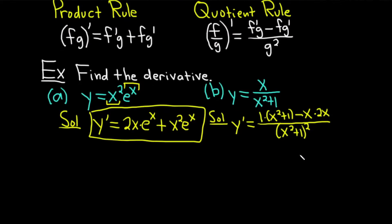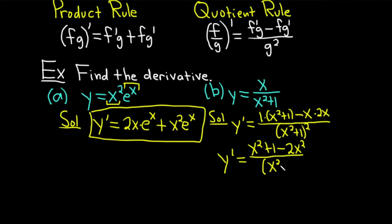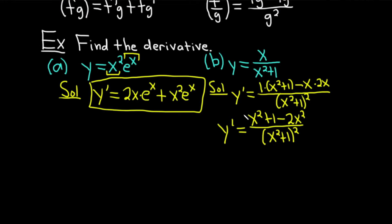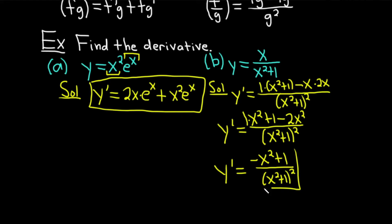Let's clean this up. So y prime is equal to... in the numerator we have x squared plus 1, minus x times 2x which is minus 2x squared, all divided by x squared plus 1 quantity squared. We can take it one step further — there's a 1 in front of the x squared, so this becomes negative x squared plus 1, all divided by x squared plus 1 quantity squared. A little bit more work when you use the quotient rule.